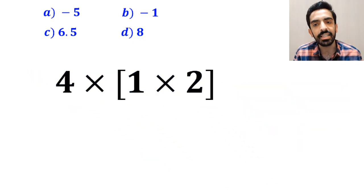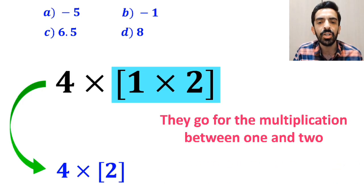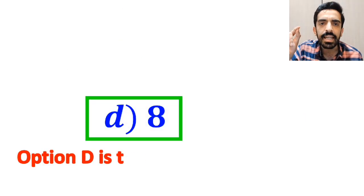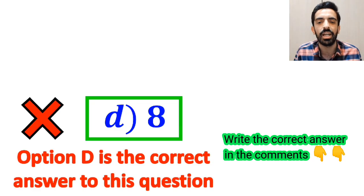And the final step, they go for the multiplication between 1 and 2 and replace this expression with 4 times 2, which eventually gives them the answer 8. And without any hesitation, they quickly say that option D is the correct answer to this question. But it's not the correct answer to this question.